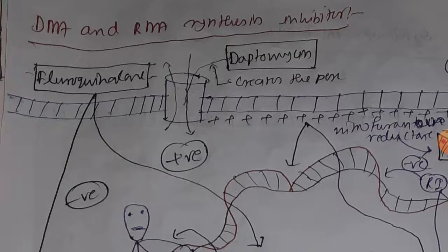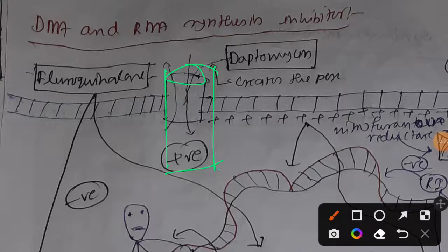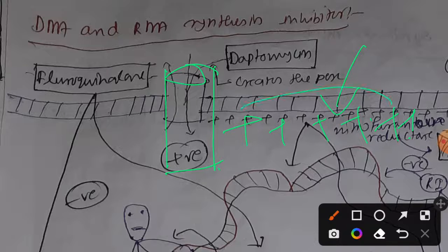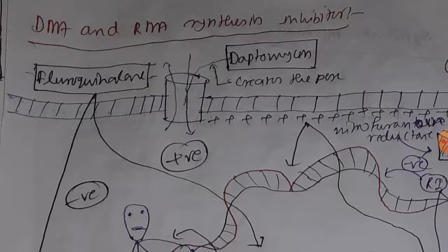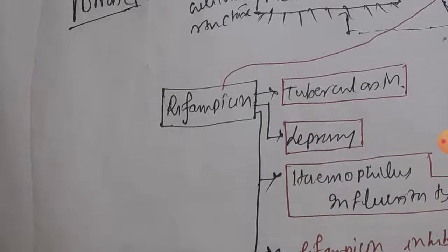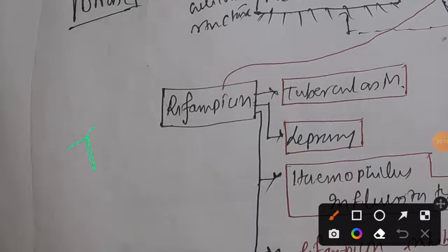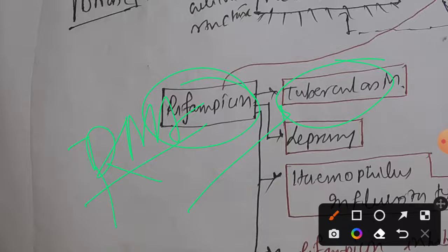Daptomycin creates pores in the cell wall and cell membrane, facilitating quick and subsequent depolarization inside the membrane. The resulting positive charge inhibits DNA, RNA, and protein synthesis. Daptomycin is mainly used for gram-positive bacteria, particularly Staphylococcus aureus infections. Rifampicin inhibits DNA-dependent RNA polymerase, preventing RNA synthesis. It is useful for tuberculosis, leprosy, and Haemophilus influenzae type B treatment.